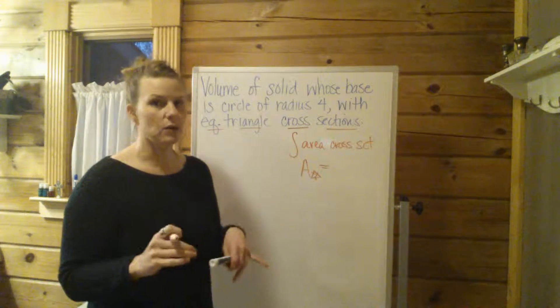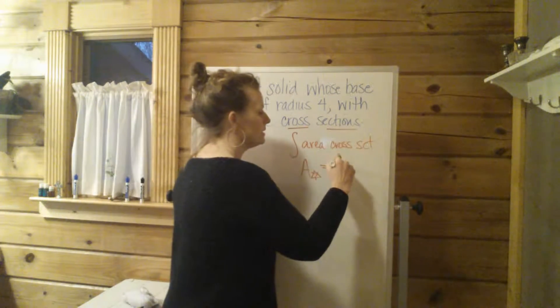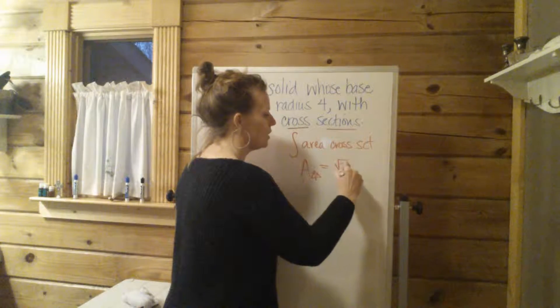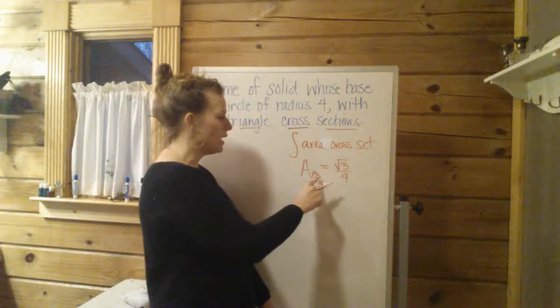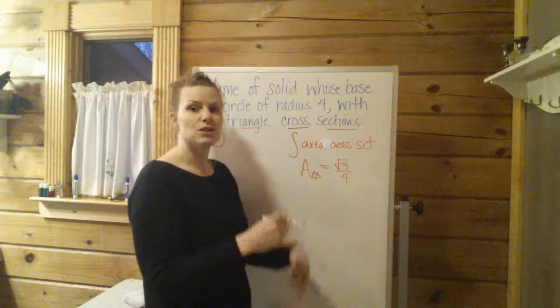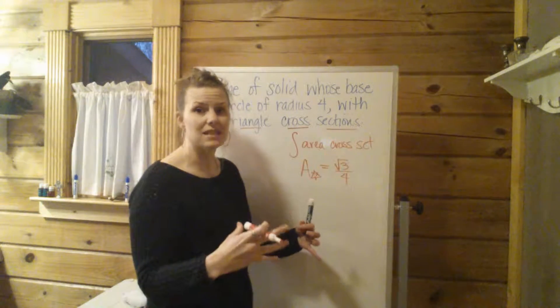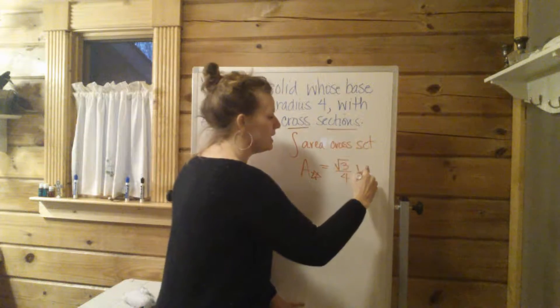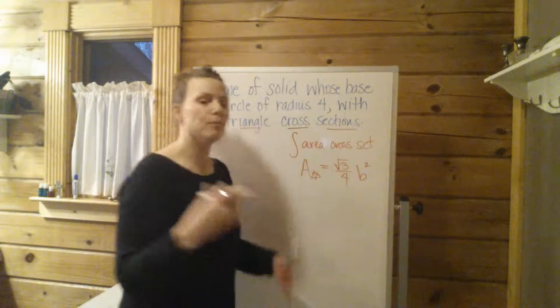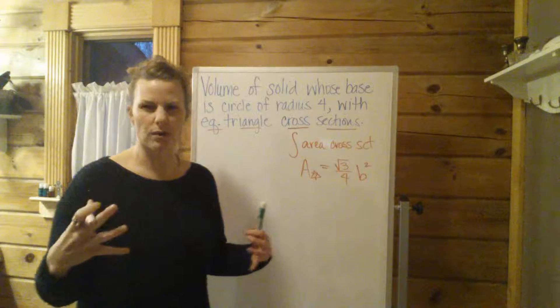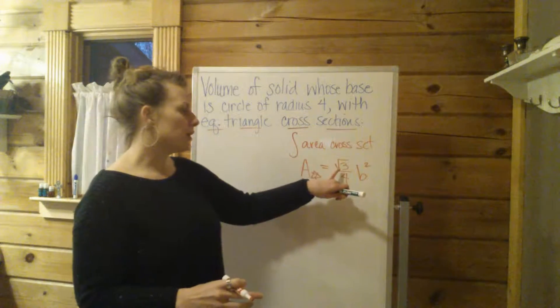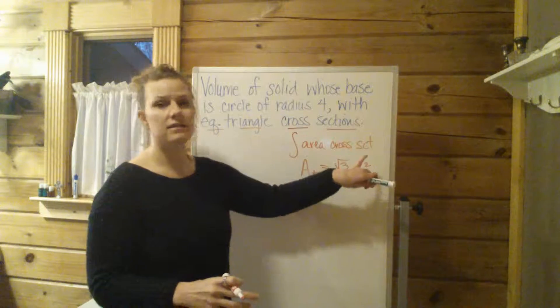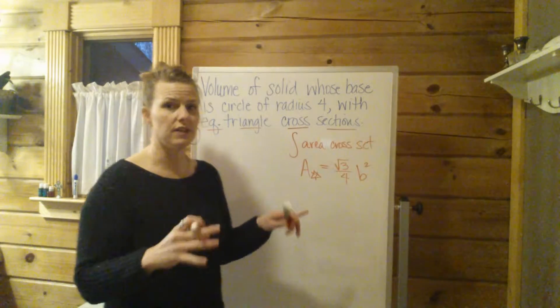But the area of an equilateral triangle is the square root of 3 over 4 times the side length squared. So all three sides are the same. I'm going to use b squared for base because we're used to that word when we're dealing with area of a triangle. So square root of 3 over 4 times the base squared is your area of an equilateral triangle.